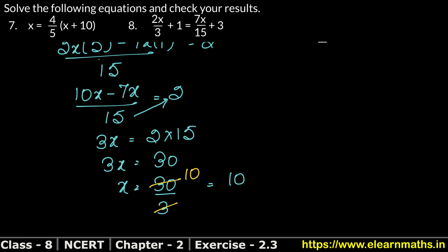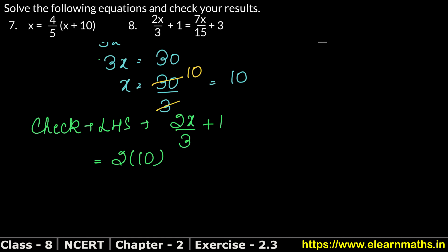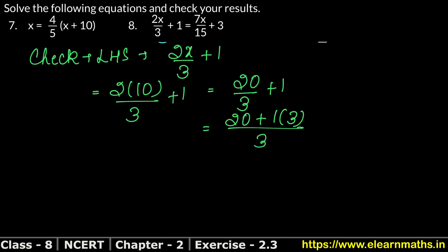Now we check whether our answer is correct. Left-hand side was 2x upon 3 plus 1. Substituting x = 10: 2 times 10 upon 3 plus 1 equals 20 upon 3 plus 1. Taking LCM of 3: 20 upon 3 plus 3 upon 3 equals 23 upon 3.